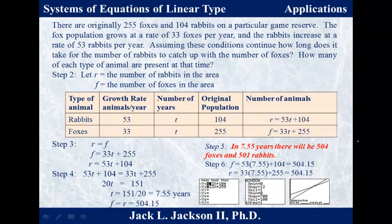The growth rates are constant, so that makes these linear functions. For rabbits, the growth rate is 53 per year. T is the time in years since we started — since the original population began. So the number of rabbits R is 53T plus 104. For foxes, the growth rate (the slope) is 33 per year, with 255 originally. So the number of foxes F is 33T plus 255.